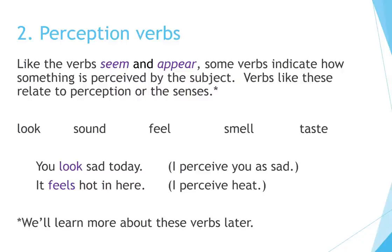Number 2: Perception verbs. Like the verbs seem and appear, some verbs indicate how something is perceived by the subject. Verbs like these relate to perception or the senses: look, sound, feel, smell, taste. For example: 'You look sad today' — I perceive you as sad. 'It feels hot in here' — I perceive heat.